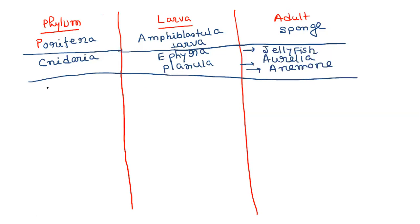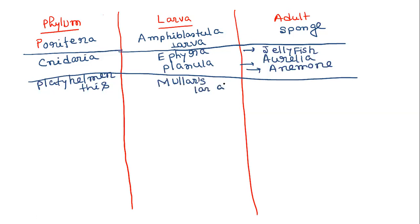Phylum platyhelminthes: larval stage is Muller's larva, and the adult stage becomes flatworms.